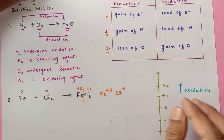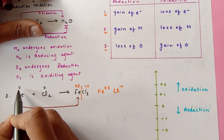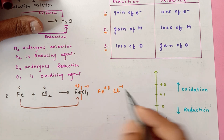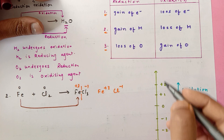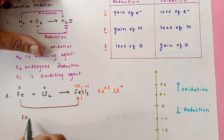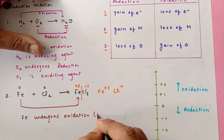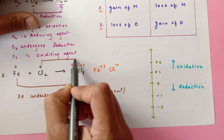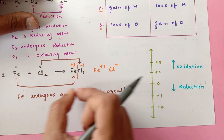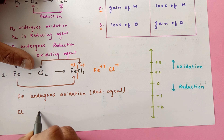Now we connect each reactant with the corresponding product. Iron had a charge of zero and now has plus three in the product — from zero to plus three you are going up the number line, which means the charge increased. So iron undergoes oxidation and is therefore a reducing agent. Now for chlorine: it had zero charge and now has minus one. Connecting chlorine to the product, from zero to minus one we are going down the number line, so Cl undergoes reduction.